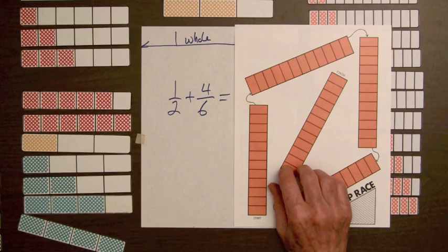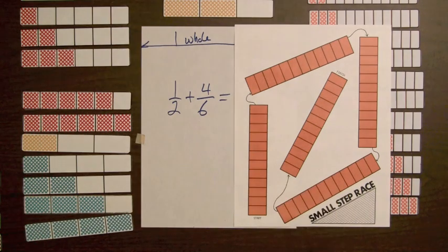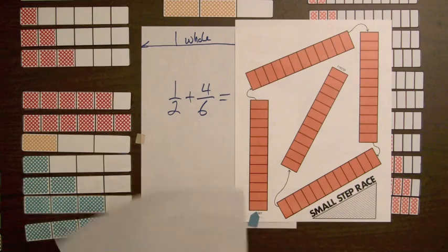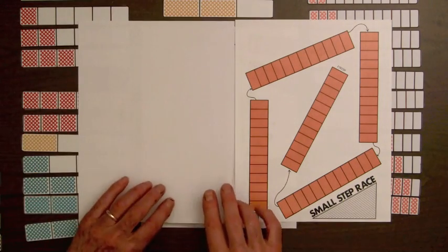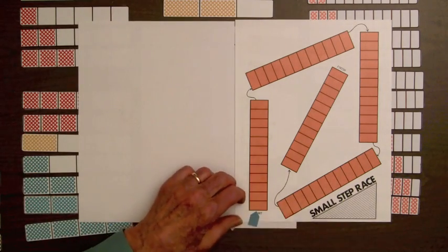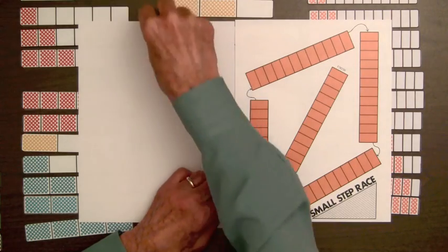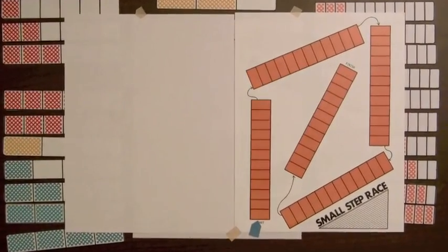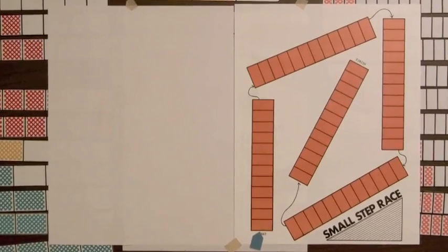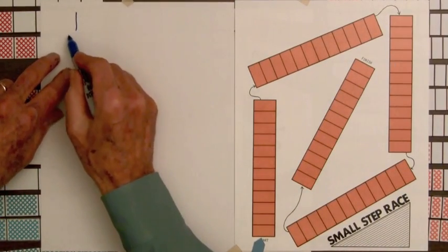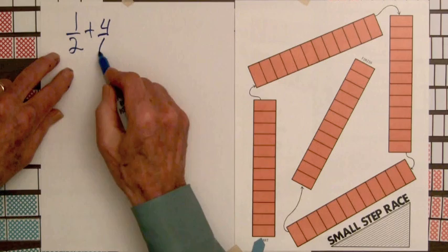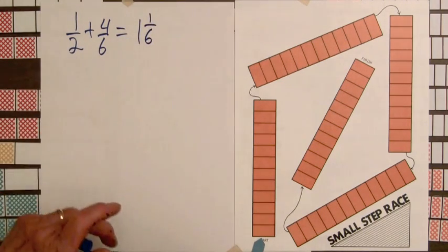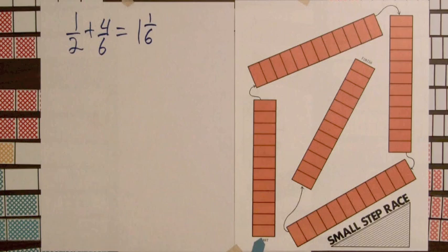So we have that mat here, and we'll put a marker down at the start position for the player. Put another sheet over here. So we're going to look at a couple of turns now for this player. Let's suppose a player selected the one-half bar and the four-sixths bar that we looked at a few minutes ago. We saw that one-half plus four-sixths is one and one-sixth.